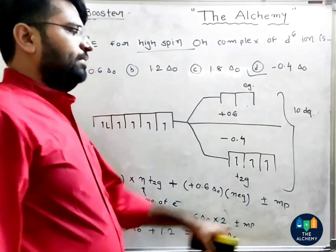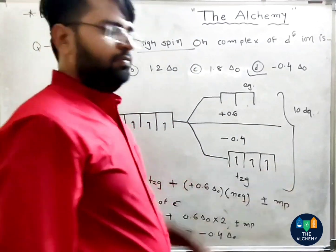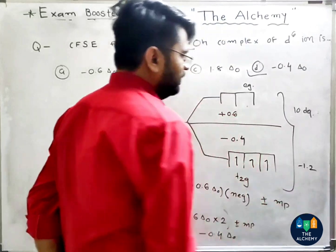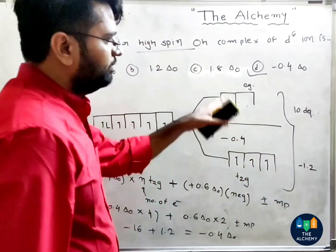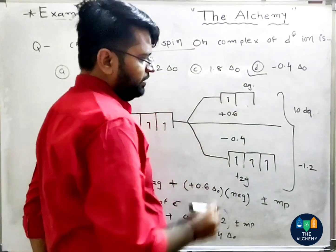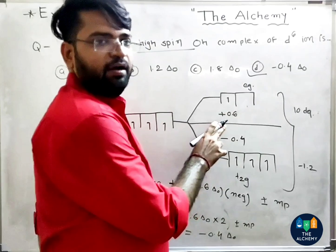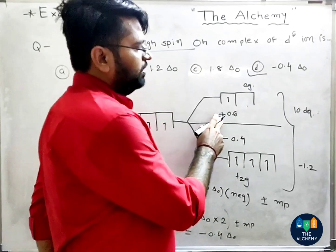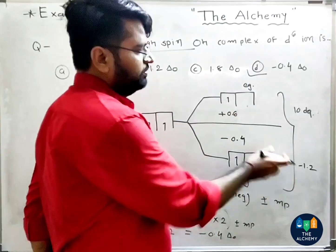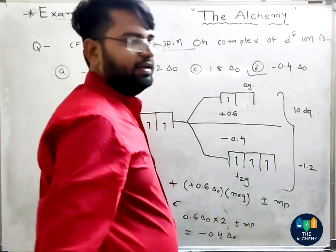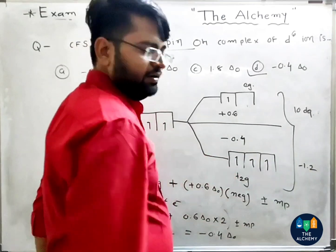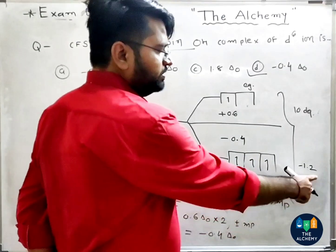The total CFSE calculation gives: −2.0 + 1.2 = −0.8Δo. Then considering the remaining electron contribution: the result is −0.8Δo for the d7 high spin octahedral complex.